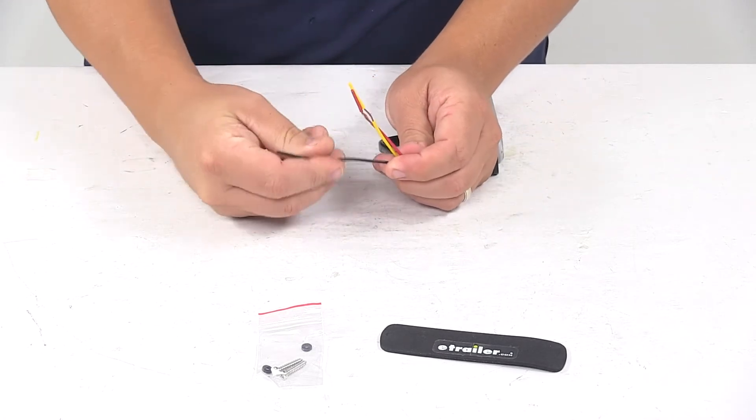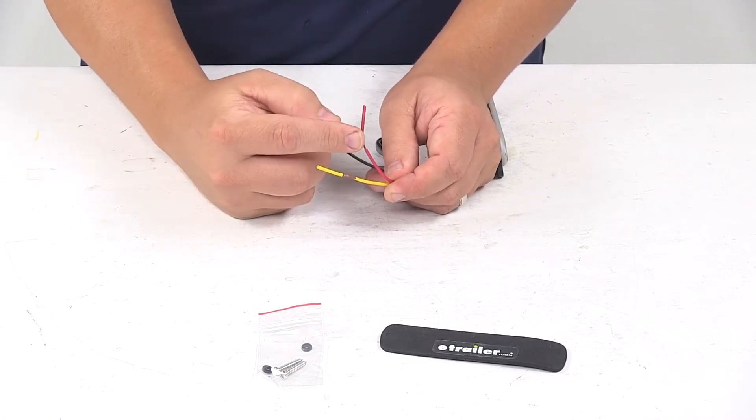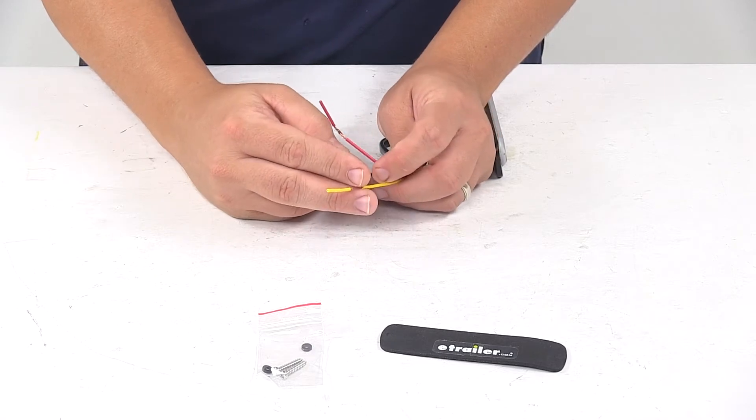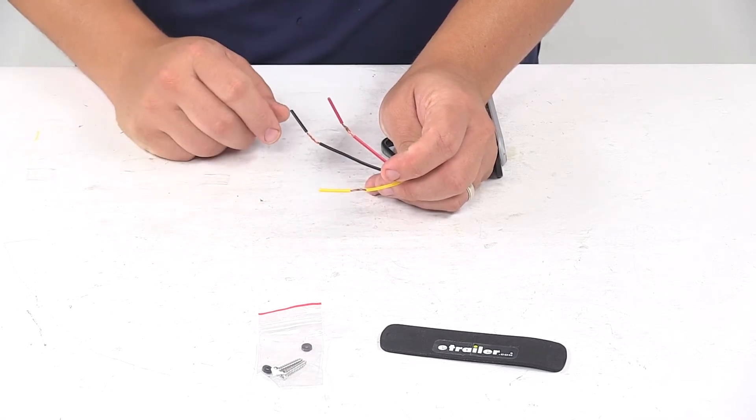It's a three-wire design. Black wire is the ground wire. Red wire is our power wire. Yellow is for synchronizing and changing the flash pattern.